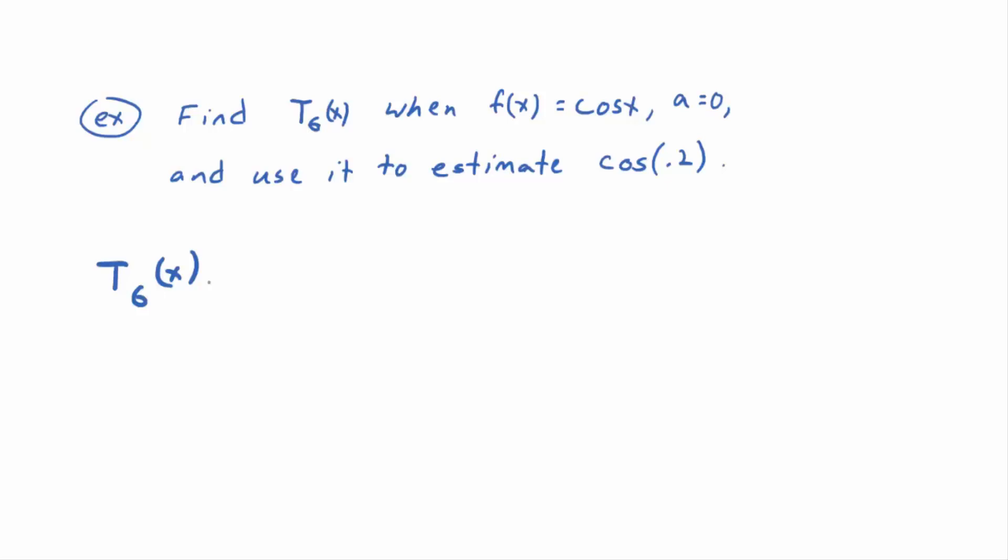So what we had for that was—remember it was one minus x squared over two factorial, which is just two, plus x to the fourth over four factorial, minus—what's the next one? X to the sixth over six factorial. Remember that cosine is an even function? That can help you remember this formula—it means the exponents better be even. We would stop there. There's your sixth degree Taylor polynomial for cosine.